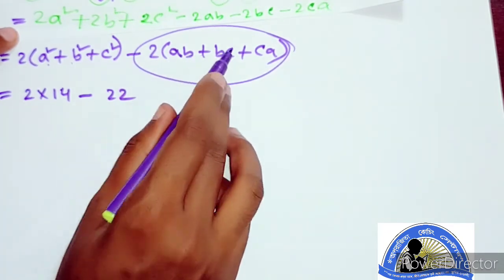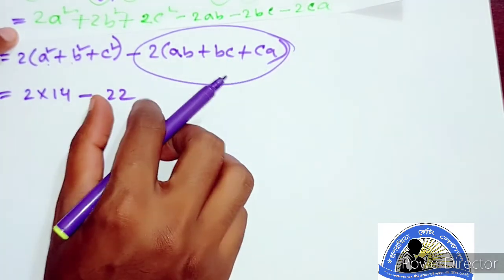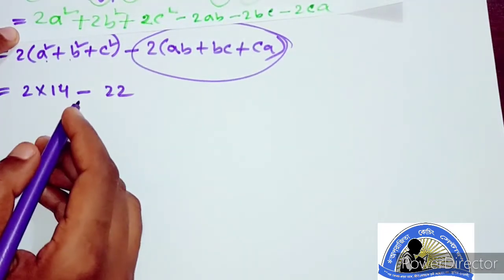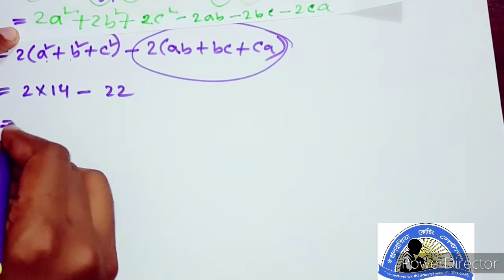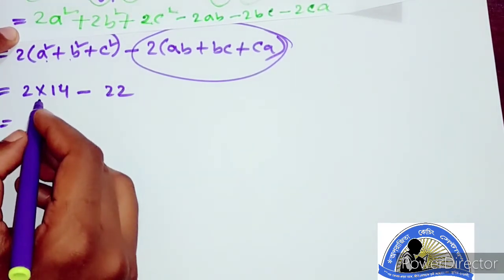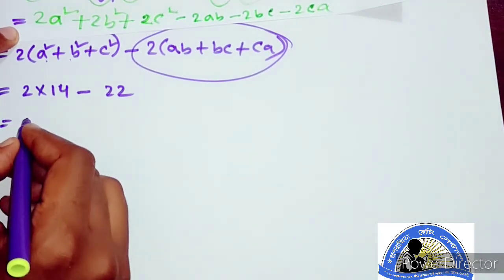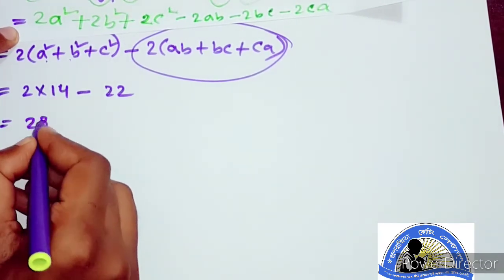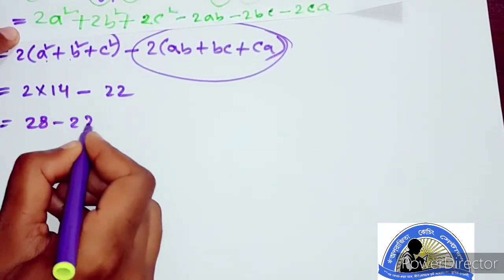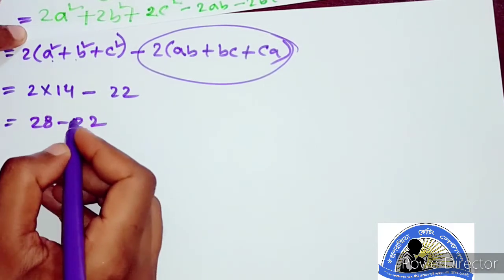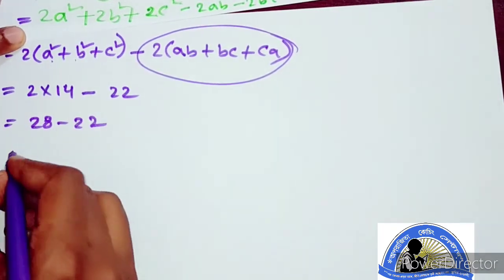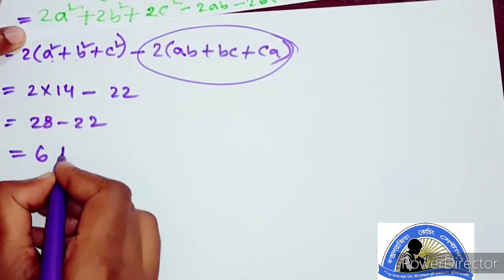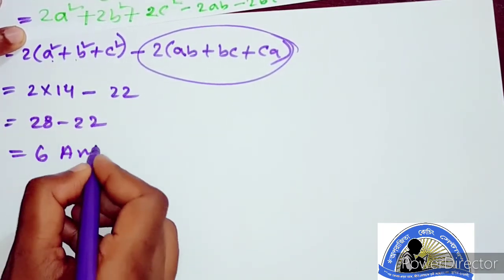We can write 2 into ab plus bc plus ca, and write it down. So we have 14 into 2, that is 28 minus 22 equals 6. So we can write it down as 6.